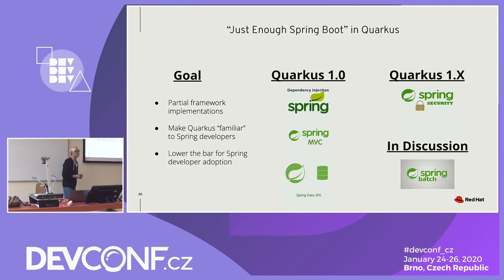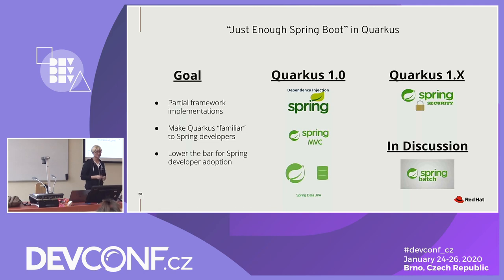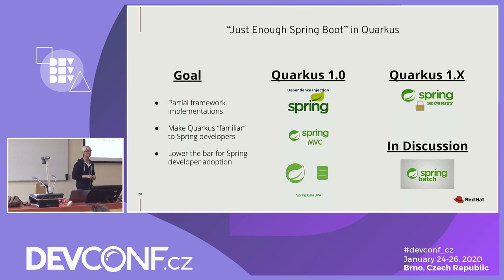Spring Boot compatibility in Quarkus — the goal is to feel familiar with existing Spring Boot applications. Some people come to me and ask 'do we need to migrate from our existing Spring Boot application to Quarkus to get those native and super fast benefits?' You don't need to do that entirely. We don't support the entire Spring ecosystem, but we support the common popular Spring Boot components such as dependency injection, Spring MVC, Spring Data JPA, and Spring Security.